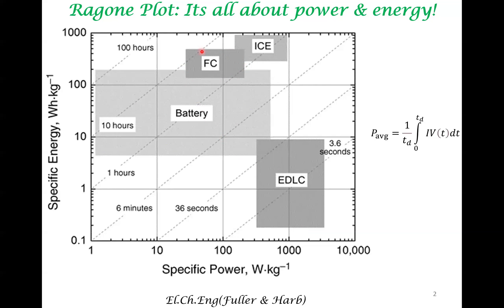Fuel cells are somewhere in between. There is a window because there are different battery chemistries, so the specific energy and specific power can vary and are typically within this window. Fuel cells are pretty much like a secondary battery, but unlike a battery, the fuel is constantly supplied. In the jargon of chemical engineering, a battery can be thought of as a batch reactor which converts exothermic chemical energy into electrical energy, whereas a fuel cell is a flow reactor which again converts exothermic chemical energy to electrical energy.